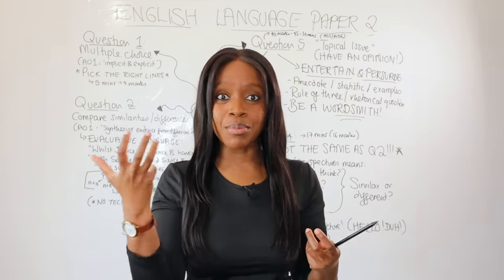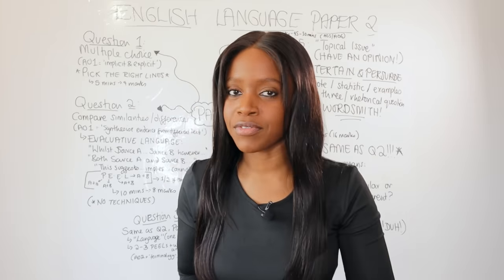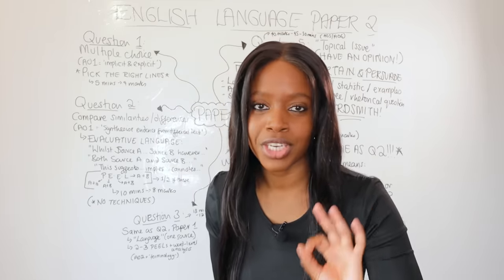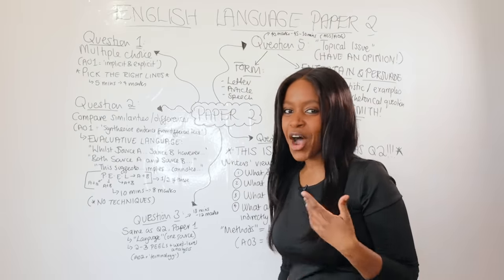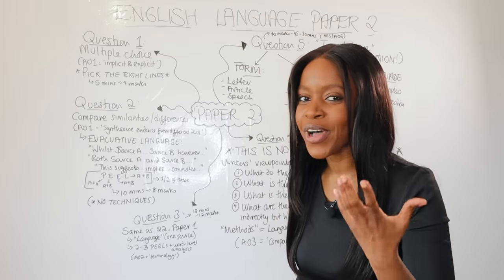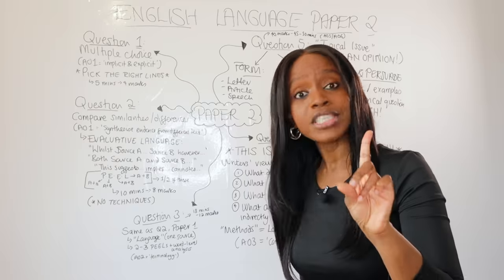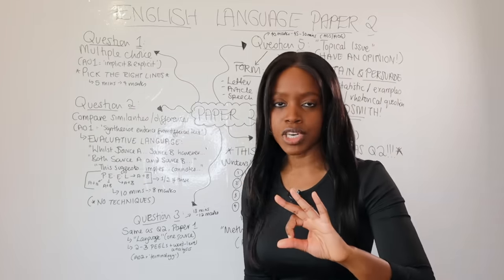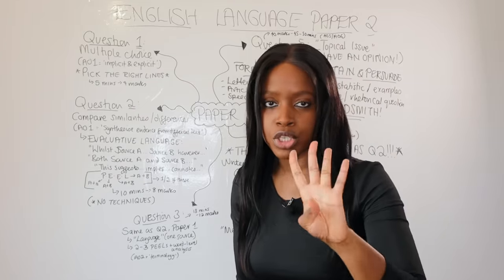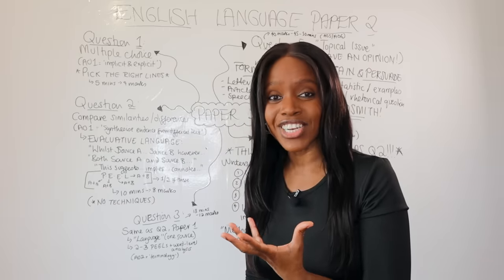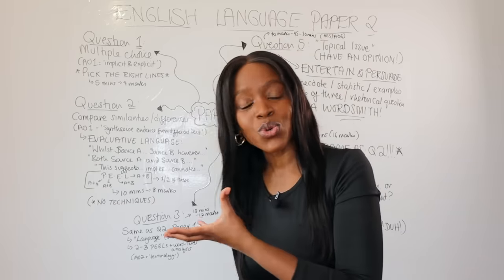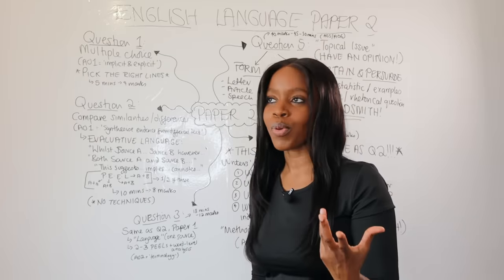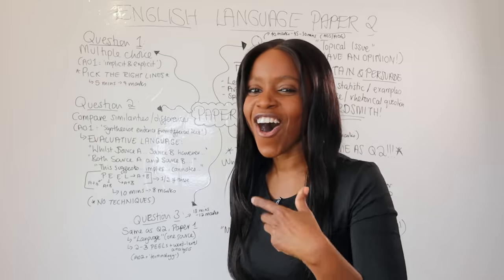Remember that when it comes to language paper two, you always get two inserts. Source A is always the modern text and source B is the Victorian text. I'm going to cut straight to the chase — let's get into it with question number one. Question one is really simple and straightforward; it's worth four marks.